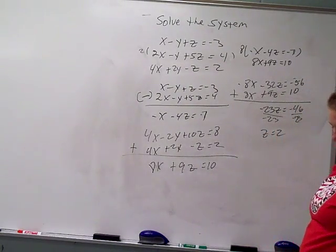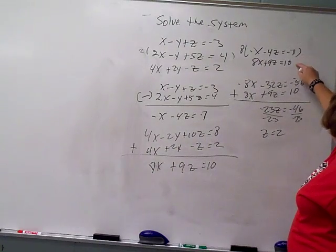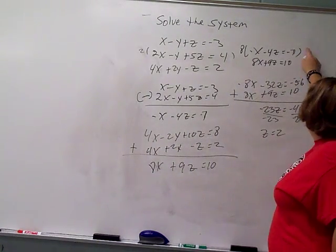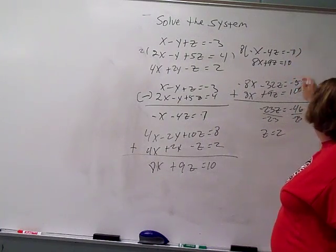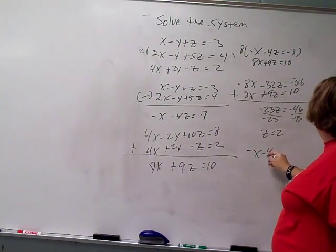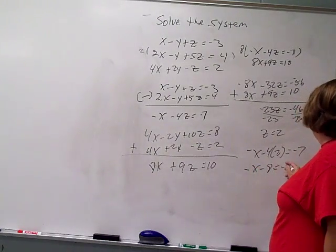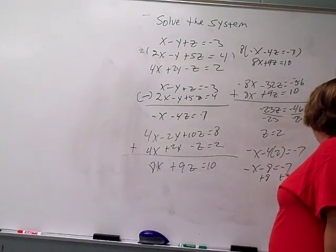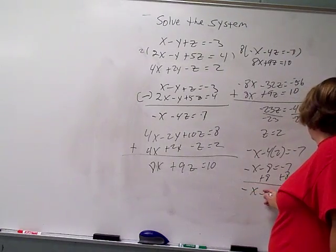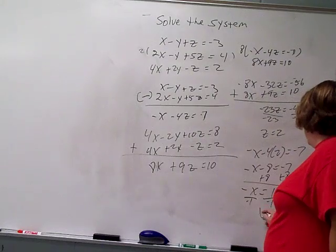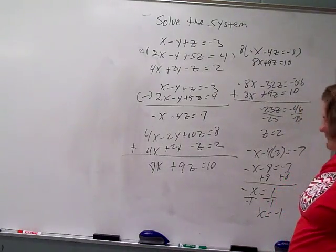Okay, so now I'm going to take that z equals 2 and I'm going to plug it back into one of my new ones to solve for x. So I have negative x minus 4 times 2 equals negative 7. So it's negative x minus 8 equals negative 7. Add my 8. Negative x equals 1. That's negative x. So divide by 1. And x would be negative 1.